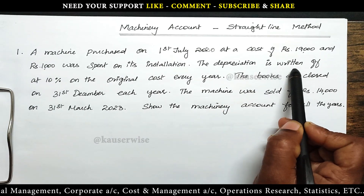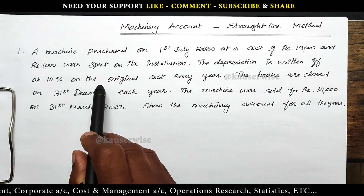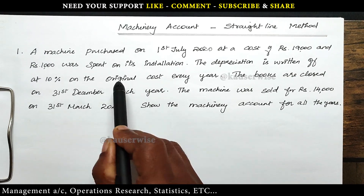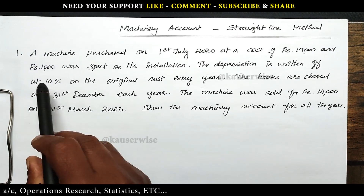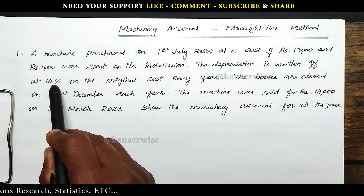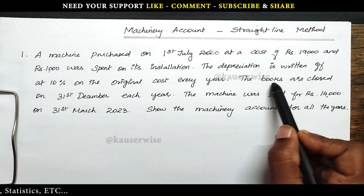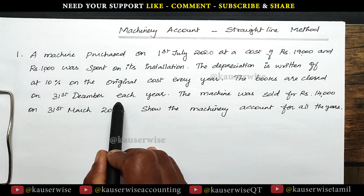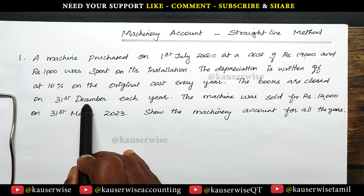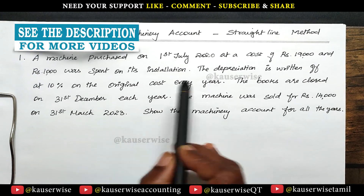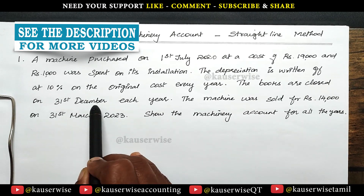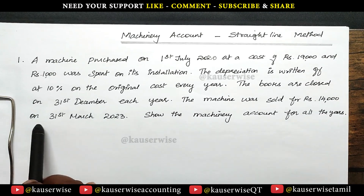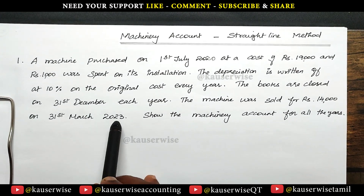The depreciation is written off at 10% on the original cost every year — that means straight line method. The rate of depreciation is 10%. The books are closed on 31st December each year, so we calculate depreciation only at the end of the year, which is 31st December every year.